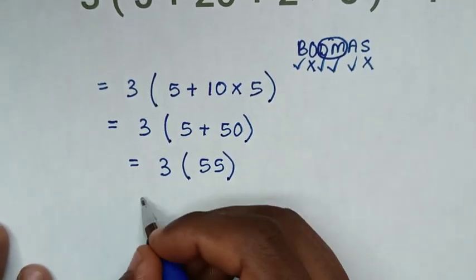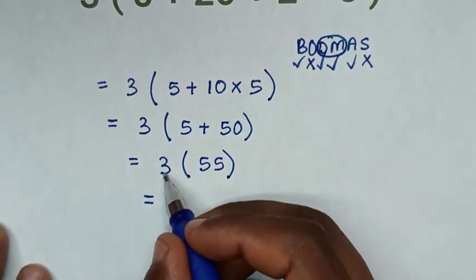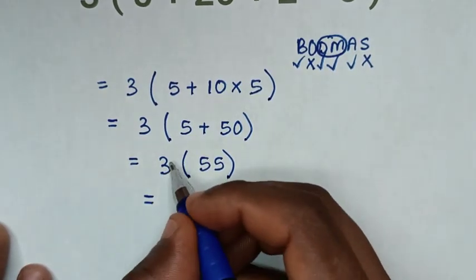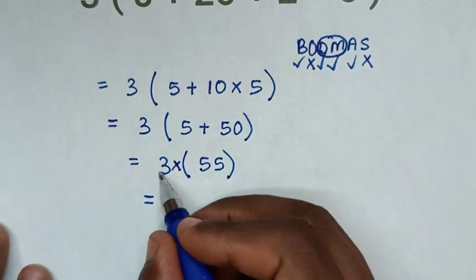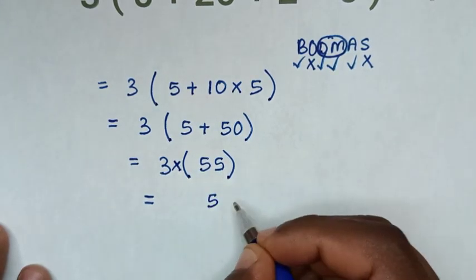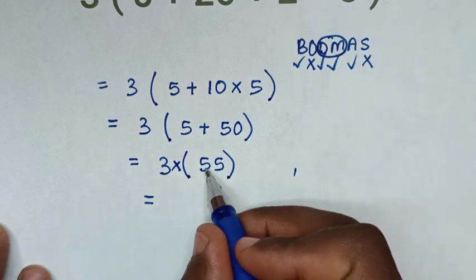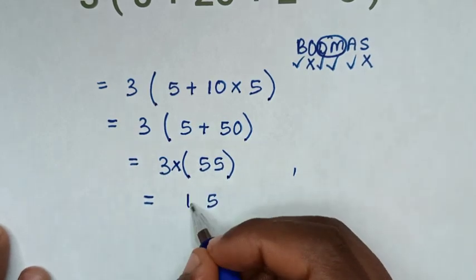Then to open this bracket we have multiplication. So 3 times 5 is 15 goes 1. 3 times 5 is 15 plus 1 is 16.